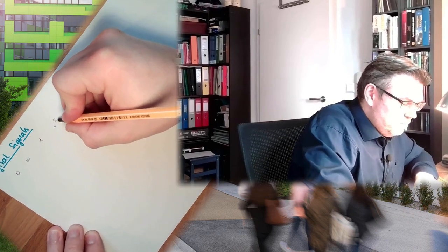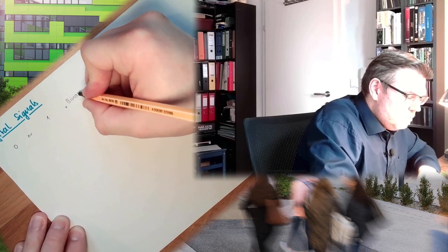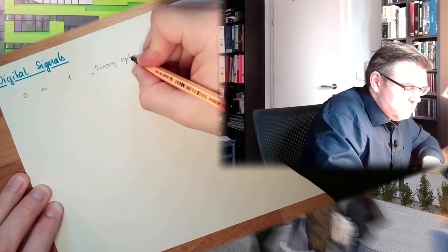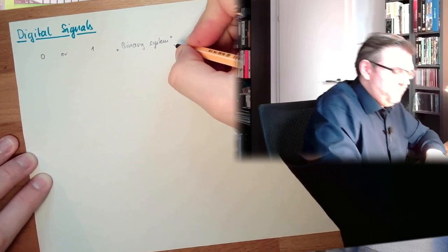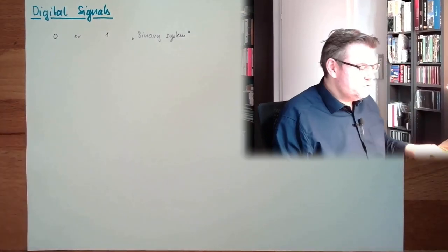So either it's there or not. We only have two symbols, two things, and those two things are either zero or one. This is the so-called binary system. There's a video about this binary system you can watch.